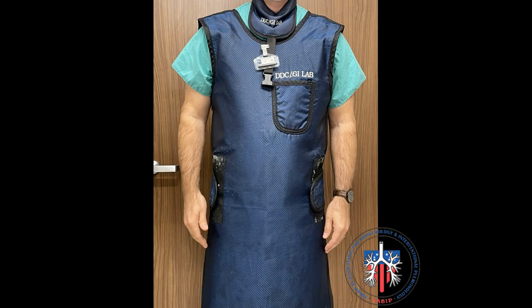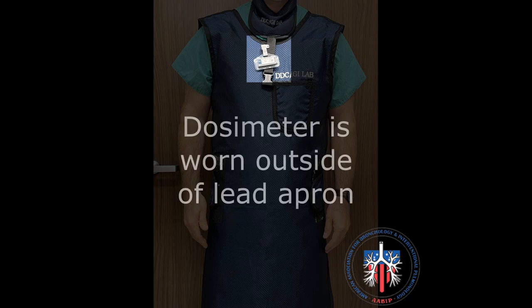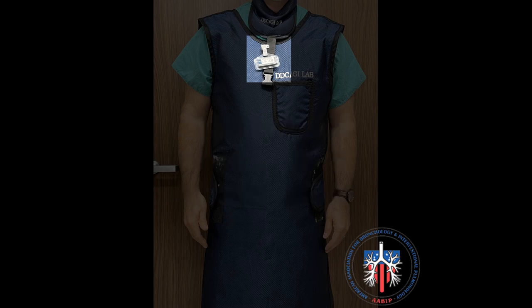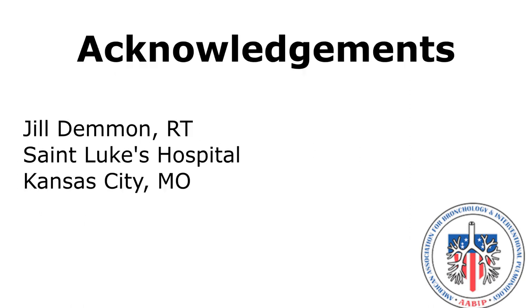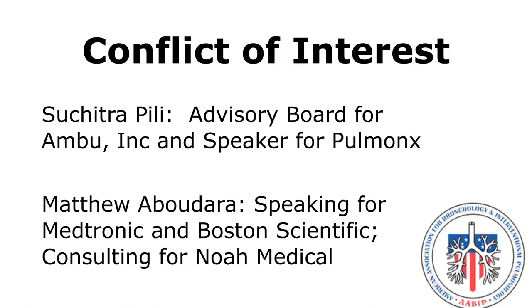The lead apron should be free of visible defects and cover the upper chest and legs to below the knee. The thyroid shield should cover the neck completely. The dosimeter should be worn outside of the lead apron over the chest — this monitors staff exposure and should be worn for all procedures using fluoroscopy.